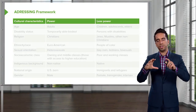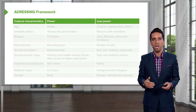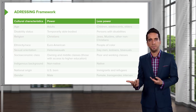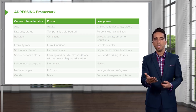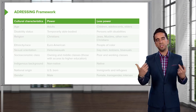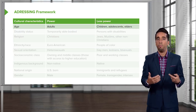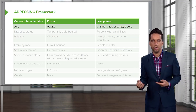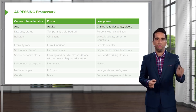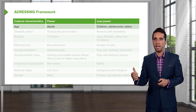Here is a summary table going through the different points of the ADDRESSING framework. It looks at the groups that have more power versus those who have less power for each specific identifier. These are generalizations, not meant to stereotype, but to help identify the broad range within each characteristic. For example, adults tend to have more power in terms of identity versus young children, adolescents, and elders — roughly the 30-to-60 age group would be considered more powerful than the young or elderly.